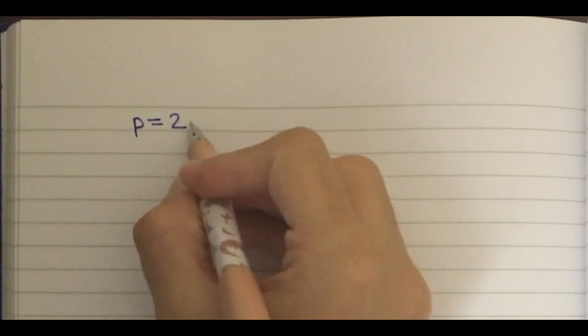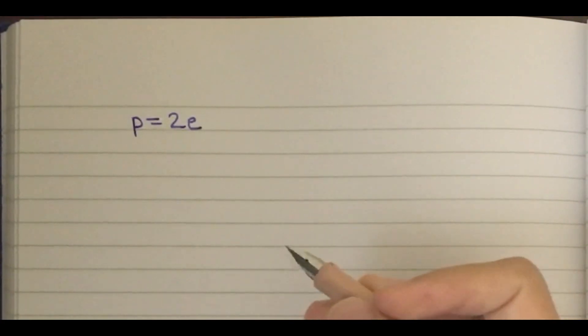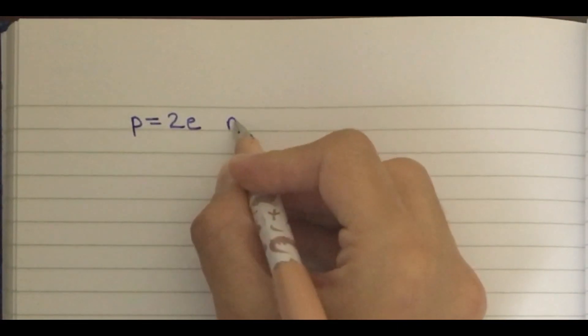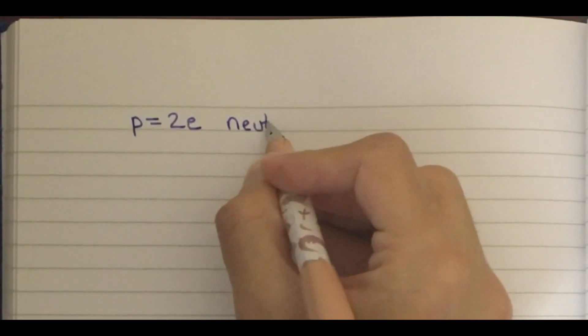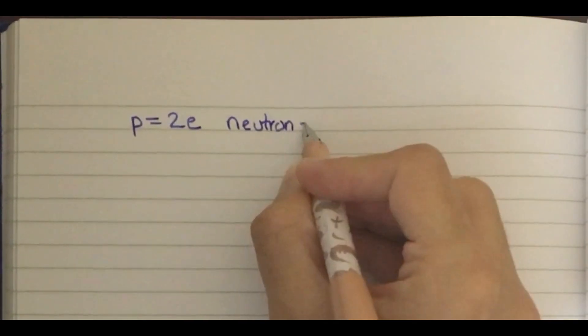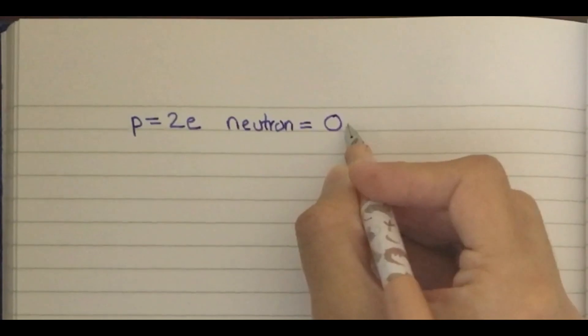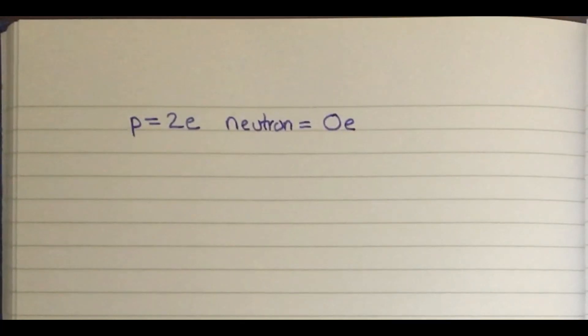We know the charge of proton is +2e, and neutron has zero charge. We can see that the up quark is given as +2/3 and down quark is given as -1/3.